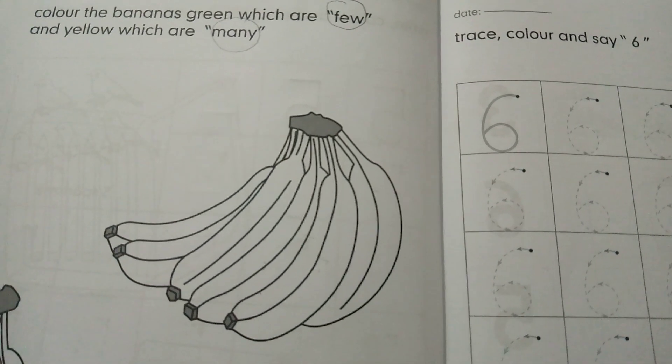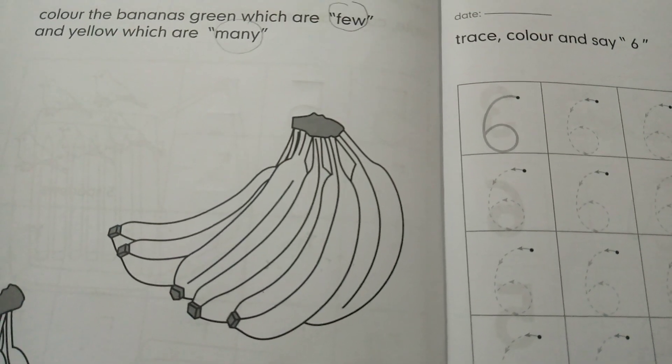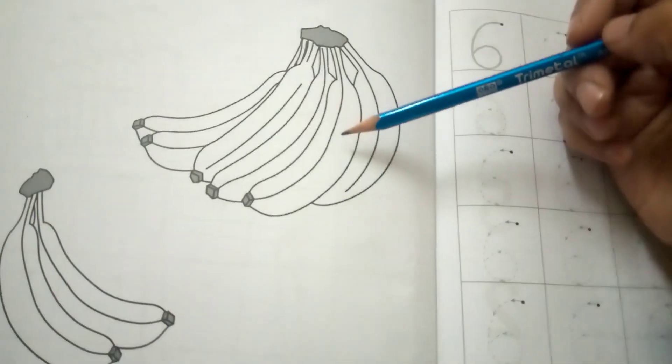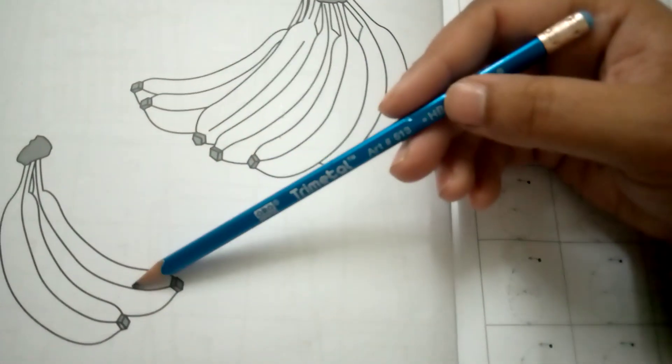Color the bananas green which are few and yellow which are many. Look at these - these are many and these are few. Many ka matlab hai bohat zada and few ka matlab hai thode. These are many bananas, these are few.